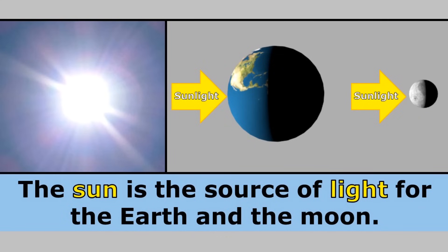The Sun is the source of light for the Earth and the Moon. The Sun gives off large amounts of light, but the Earth and the Moon do not give off light.